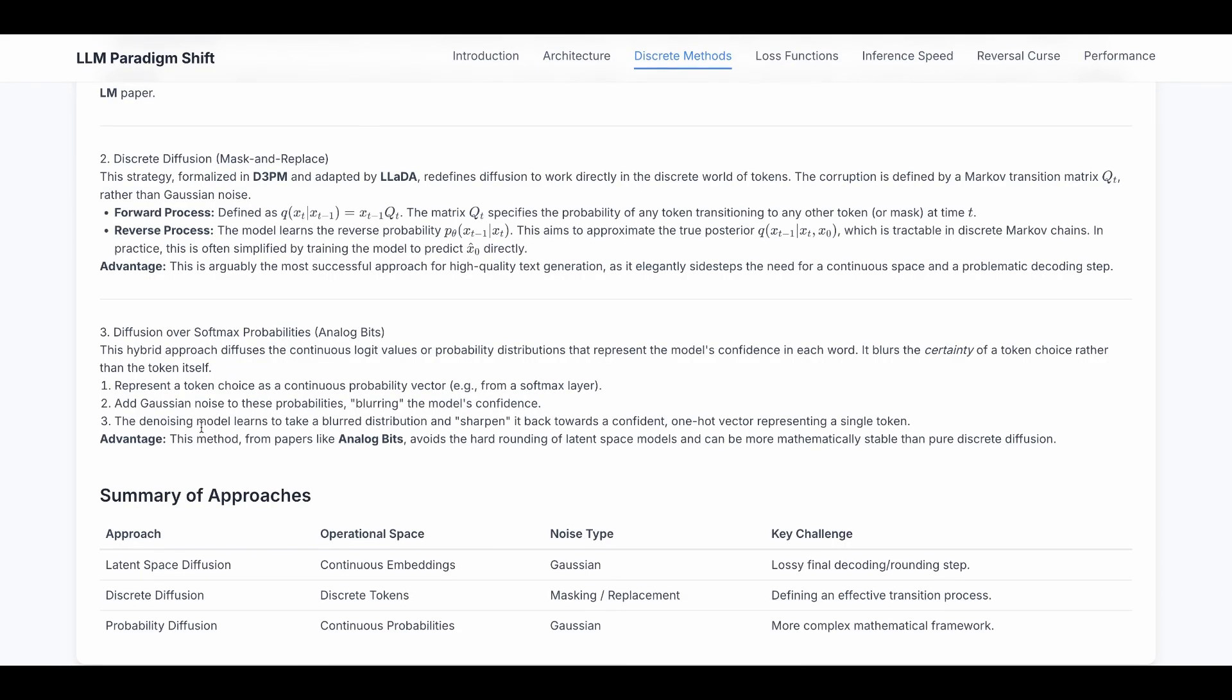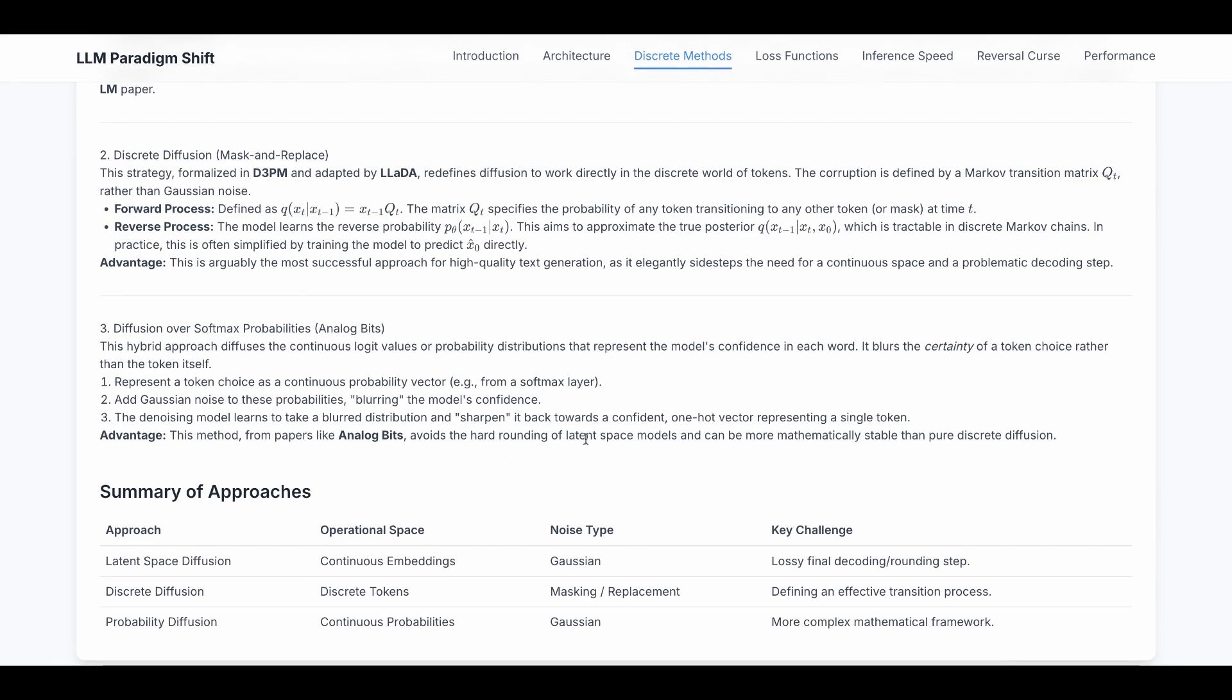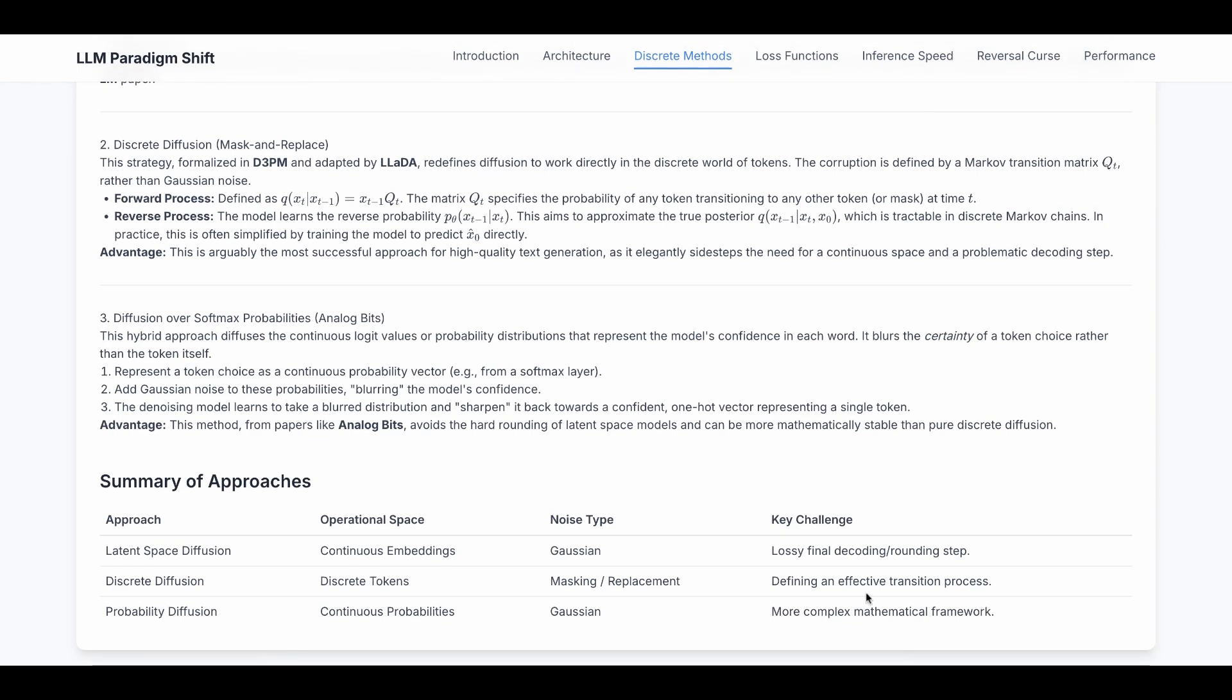And then we add Gaussian noise to these probabilities, blurring the model differences. This is the forward process. The denoise process, the reverse process, learns to take the blurred distribution and sharpen it back towards a confident one-hot vector representing a single token. This can avoid hard rounding of a latent space model and can be more mathematically stable than pure discrete diffusion. However, the math is definitely more complex than the previous two.